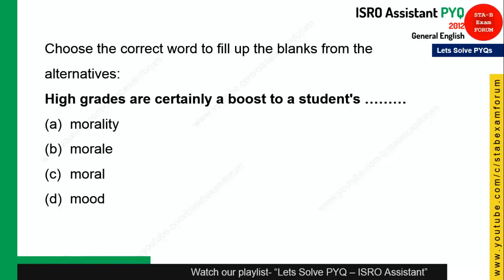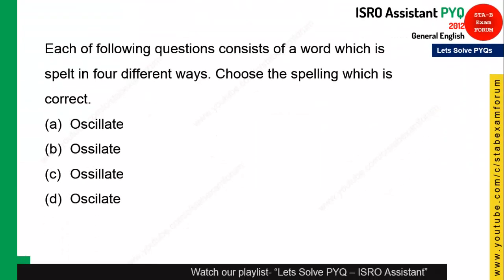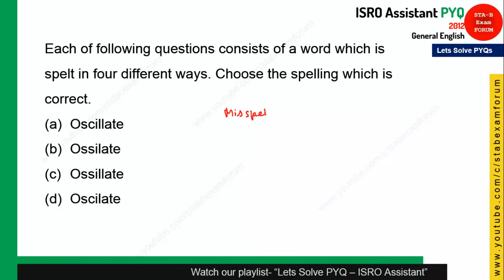This is a confusing question. 'High grades are certainly a boost to a student's ___.' Note the difference between 'moral' and 'morale' — mortality is the death rate, and 'morale' refers to mood or spirit. The correct word here is 'morale', not 'moral'. Option B is the correct answer.